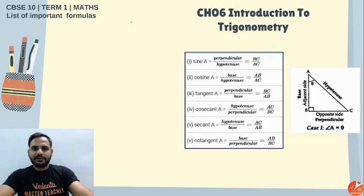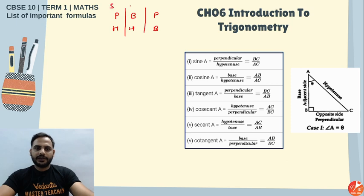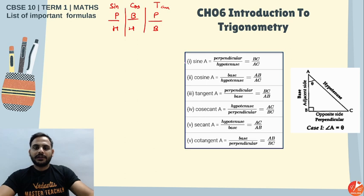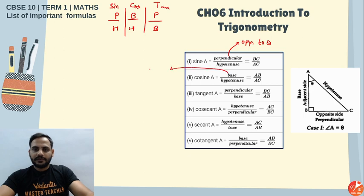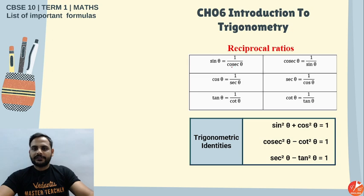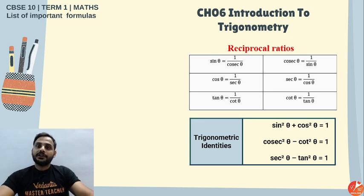Now trigonometry. Remember the mnemonic: Pandit Badri Prasad, Hari Hari Bol, Sona Chandi Tol. Sine = P/H, Cos = B/H, Tan = P/B. The perpendicular is opposite to theta and base is adjacent to theta, so which side is perpendicular or base depends on the position of theta. Sine and cosec are reciprocals, cos and sec are reciprocals, tan and cot are reciprocals. So: sin θ × cosec θ = 1, sec θ × cos θ = 1, tan θ × cot θ = 1.